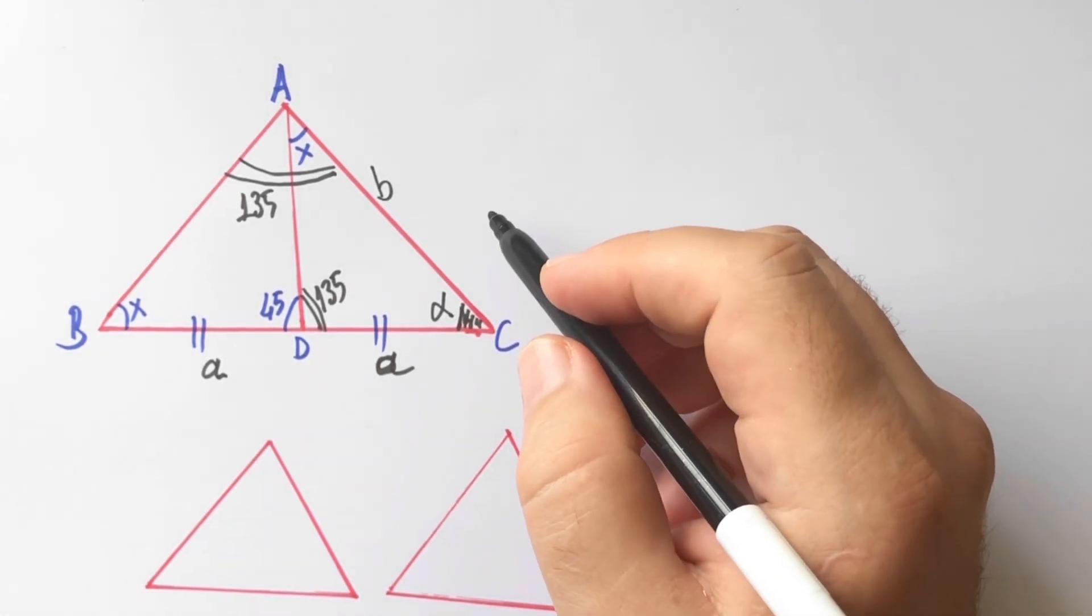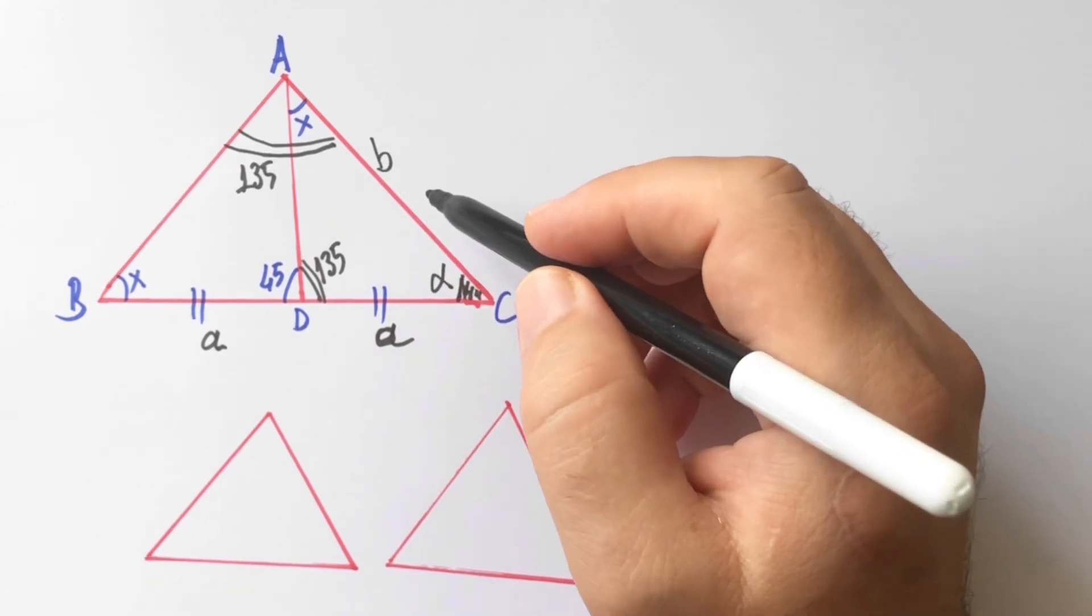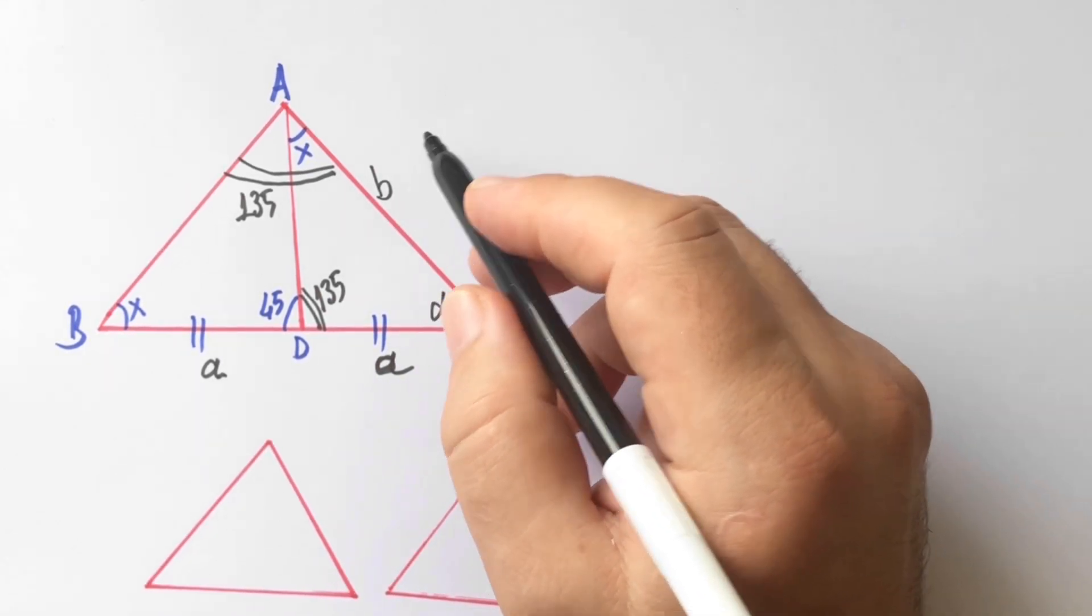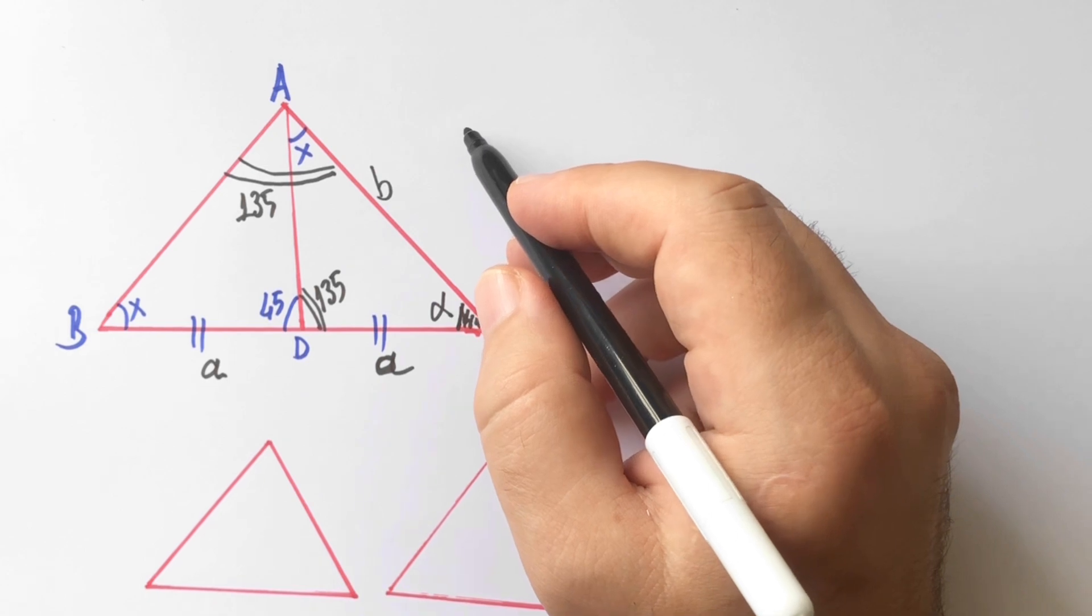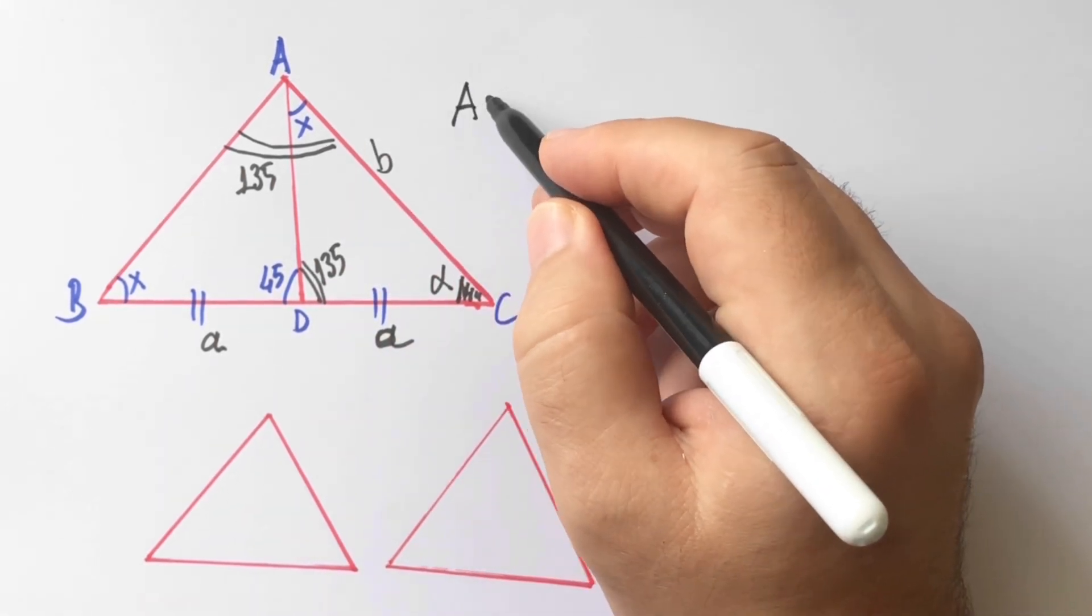If we write the similarity ratio, let's say which triangles are similar. ADC and ABC triangles are similar.